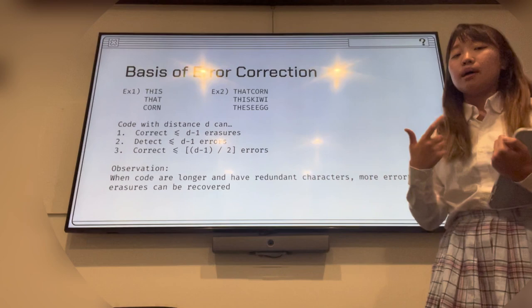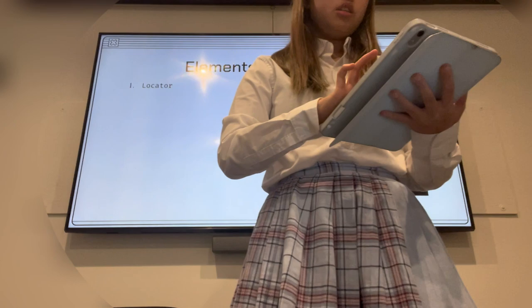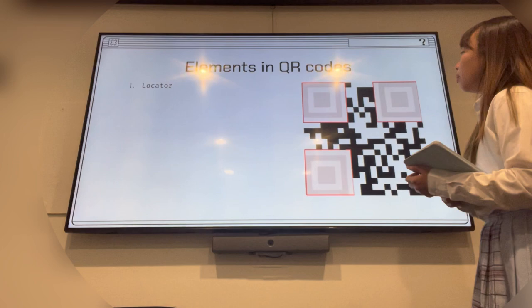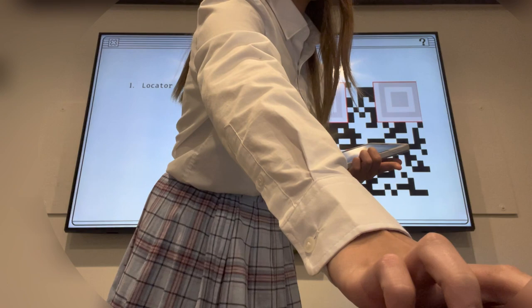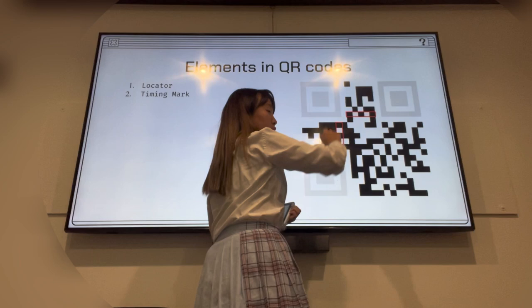So QR code is basically using that by having a bunch of error codes with the original message. First element in QR code is locator, which is these three things that everyone knows. This helps our processors to locate where the QR code is. And timing mark is in between those locators, basically doing the same thing to know where the actual QR code is.